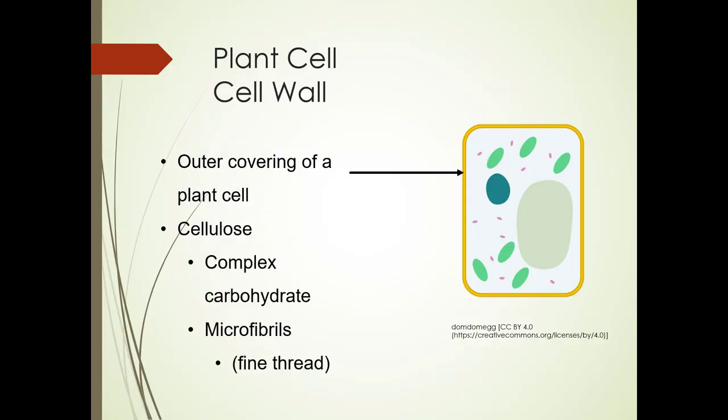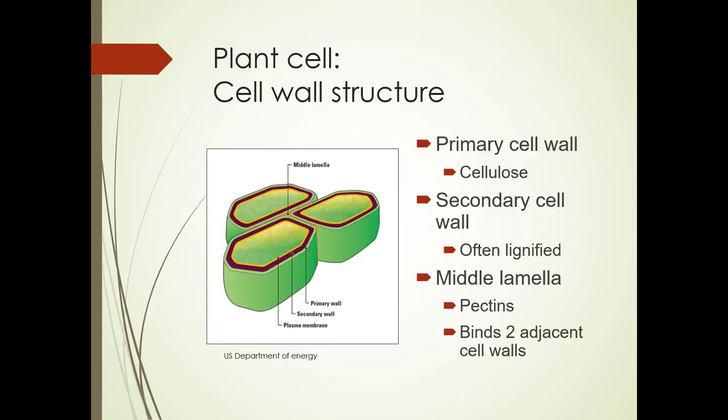The cell wall is the outer covering of the plant cell and is made up of cellulose, which is a complex carbohydrate, and microfibrils, which are fine threads. Here's a picture of the cell wall structure. The primary cell wall is made up of cellulose. The secondary cell wall is often lignified, which is rigid and woody, and that is only in woody plant material.